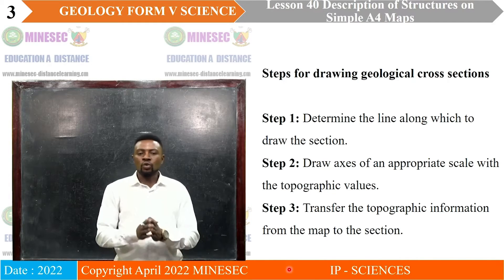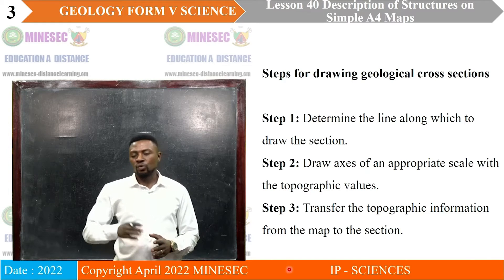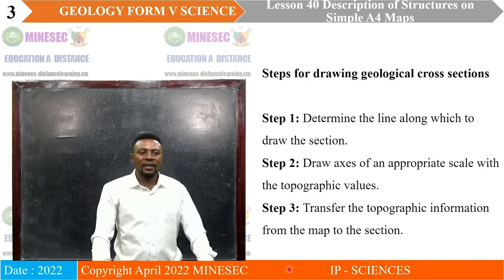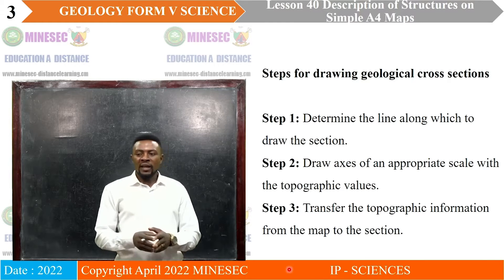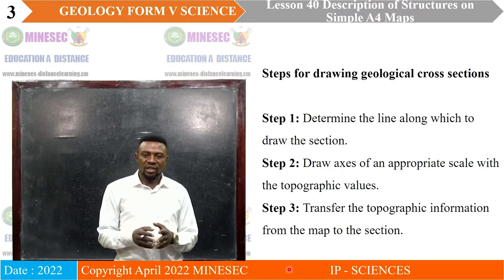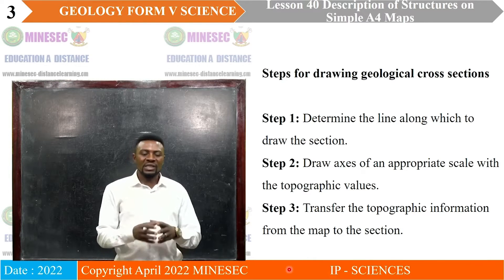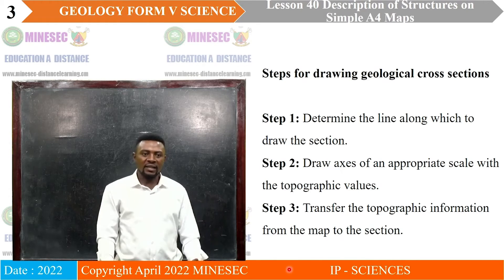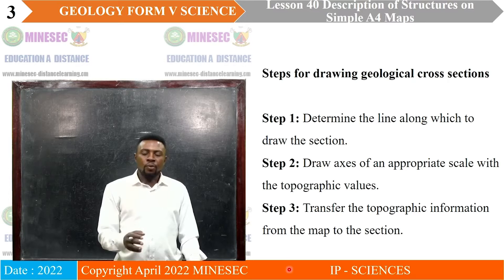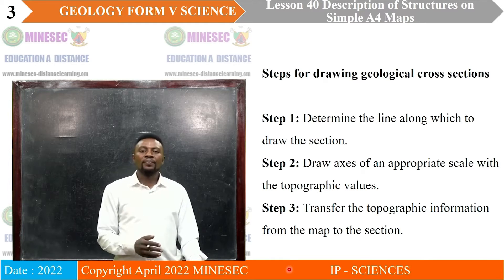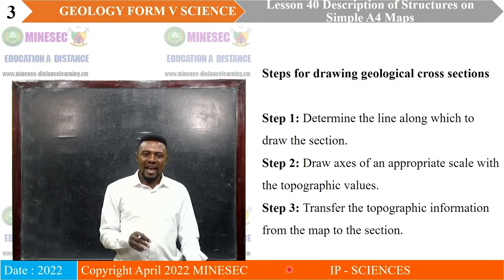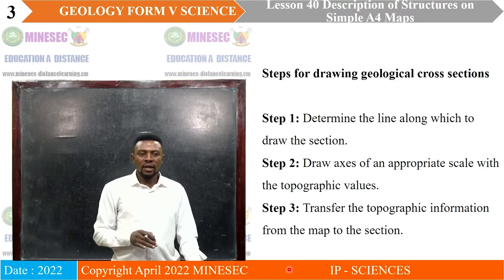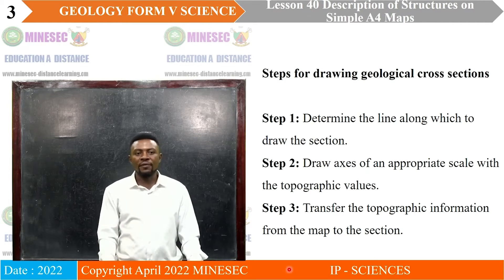The next step is to transfer the topographic information from the map to the section. All the contours that are intersected by your line of section should be transferred to your vertical elevation. Any point where the line of section intersects a contour should be calibrated along your vertical elevation. At the end, you connect all the points, and when you connect all the points you are going to have a topographic profile.